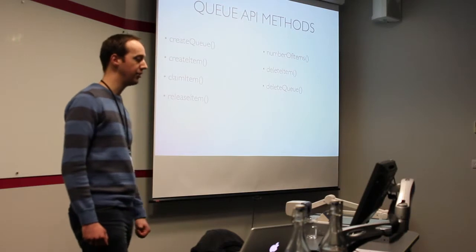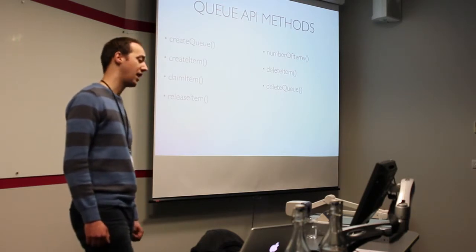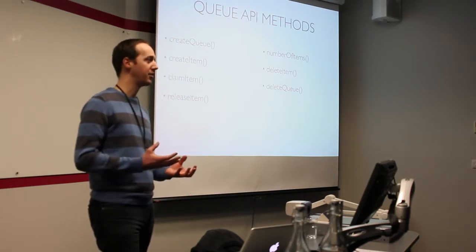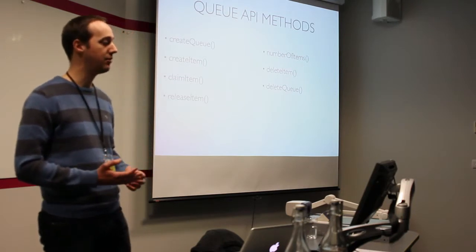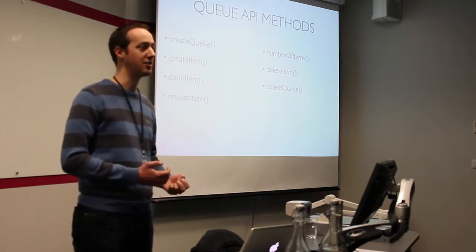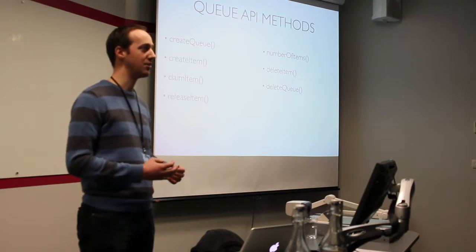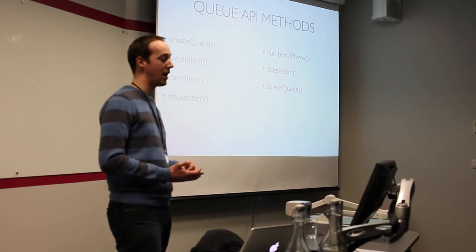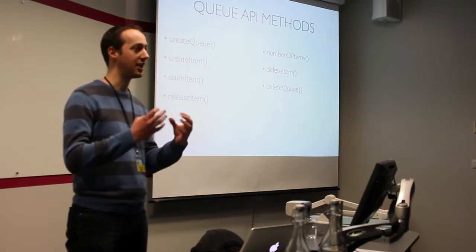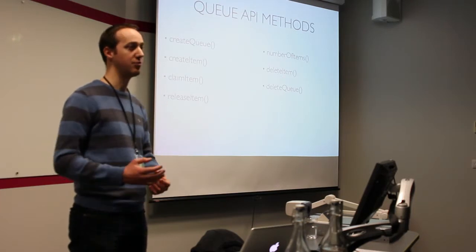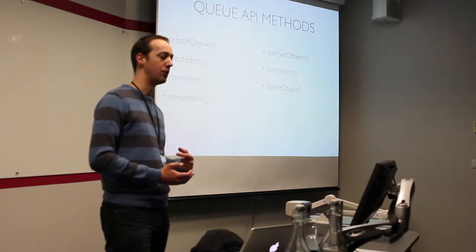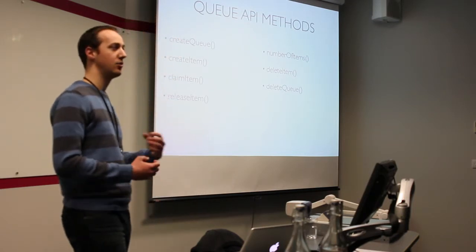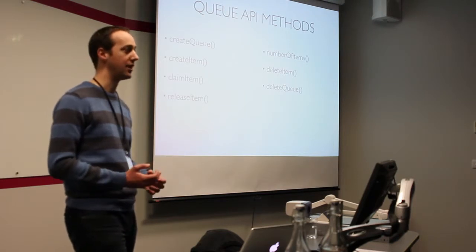The Queue API provides seven methods. createQueue does whatever the implementing class needs — for a database queue that's effectively nothing since the queue is just a name in a column; but for Beanstalkd, for example, it will create a queue structure in that backend so you can start creating items.